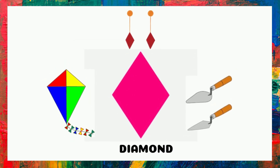What is the name of this shape? Diamond. It's a diamond. Examples of diamond are kite, earrings, travel.